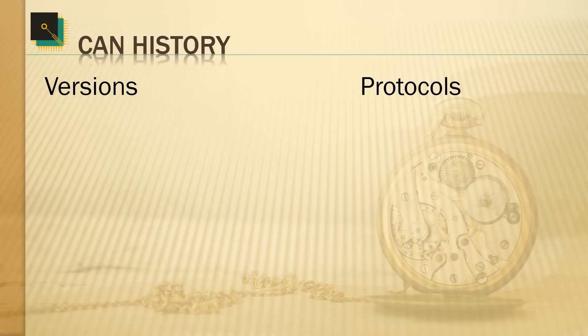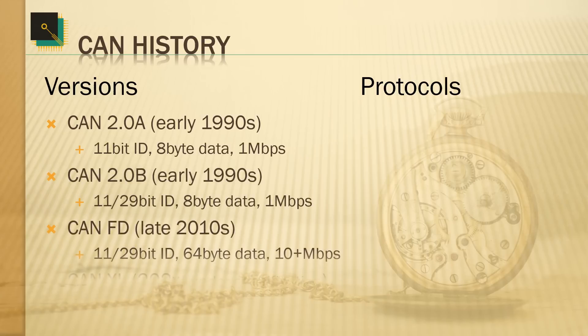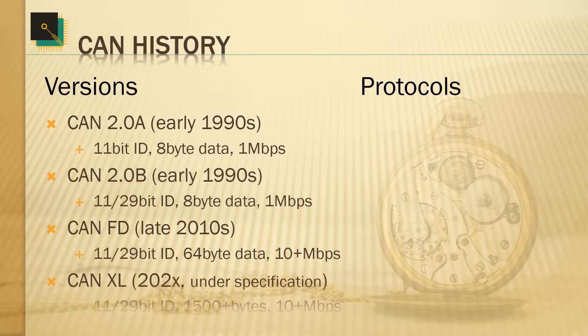The CAN version history began in the early 90s when CAN 2.0A and 2.0B were introduced. The only difference between the two was that the 11-bit CAN message identifier was extended to a 29-bit version. Today these are compatible, and all CAN controllers typically support the CAN 2.0B version, switching on the fly between 11 and 29-bit identifiers.